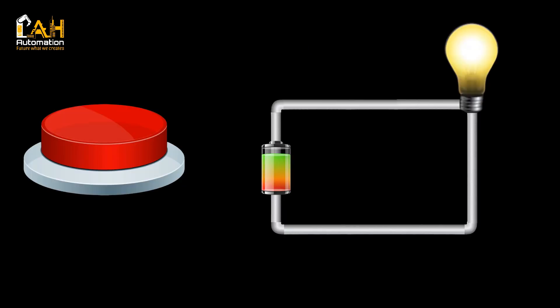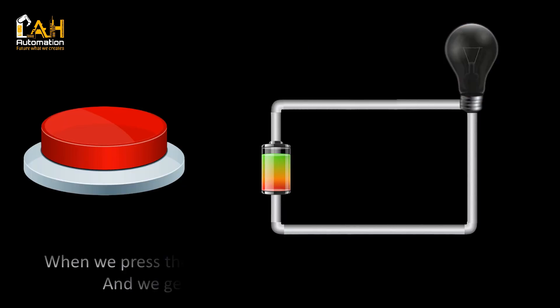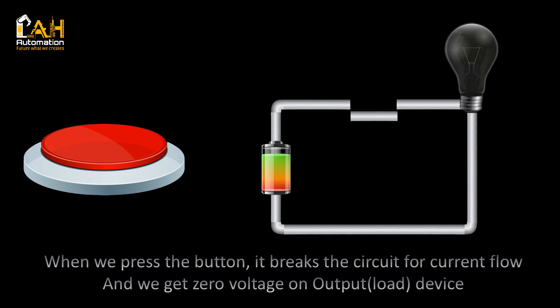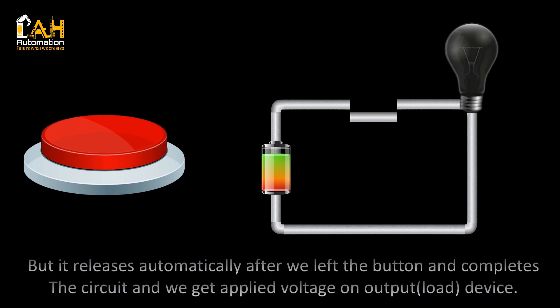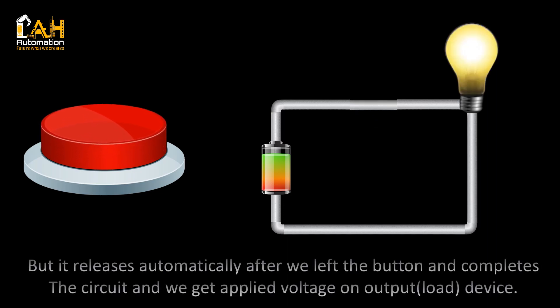When we press the button, it breaks the circuit for current flow and we get zero voltage on the output load device. But it releases automatically after we release the button, completing the circuit, and we get the applied voltage on the output load device.